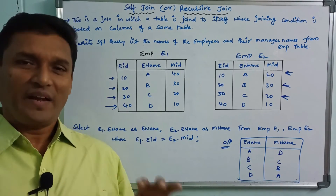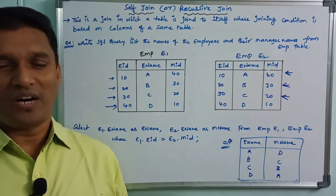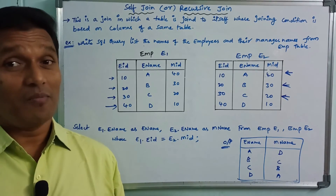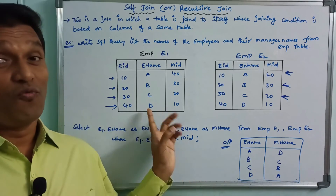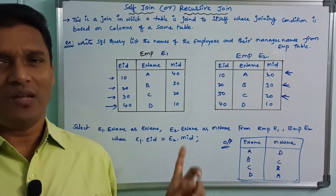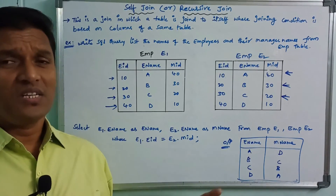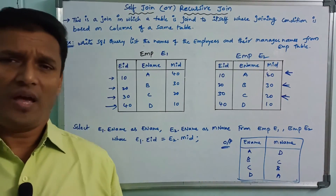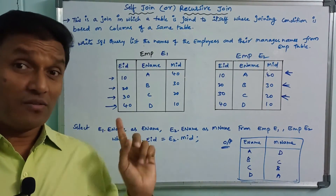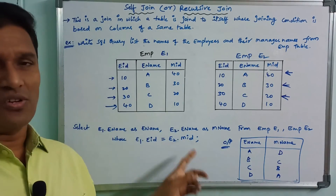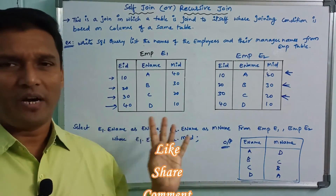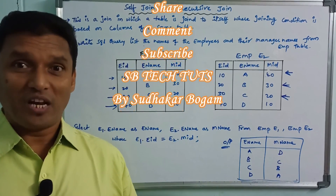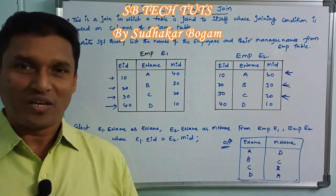Simple — a table joins itself. Self-Join is when a table joins to itself. Thank you so much for watching, like and subscribe, thank you.